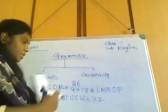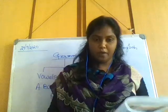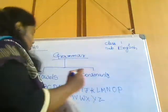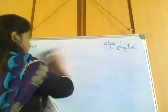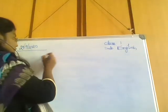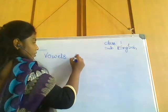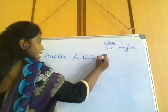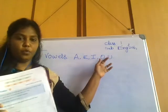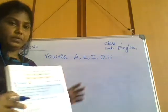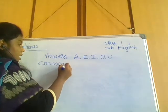So from these 26, today we will see what are vowels and consonants. What are vowels? We have 5 vowels in our English grammar. The vowels are A, E, I, O, U. These 5 are called vowels in English grammar. The rest of the letters are consonants.